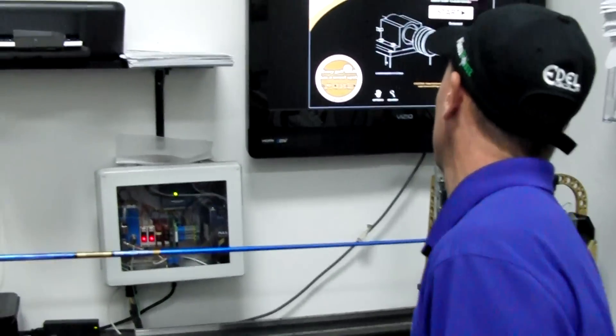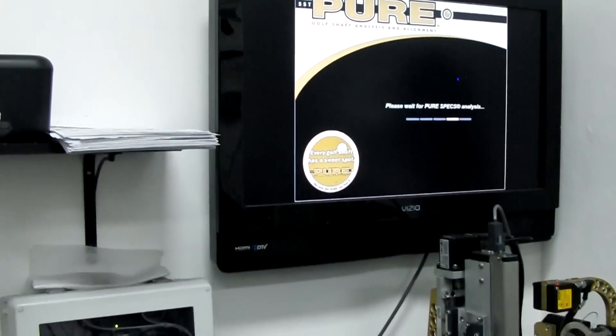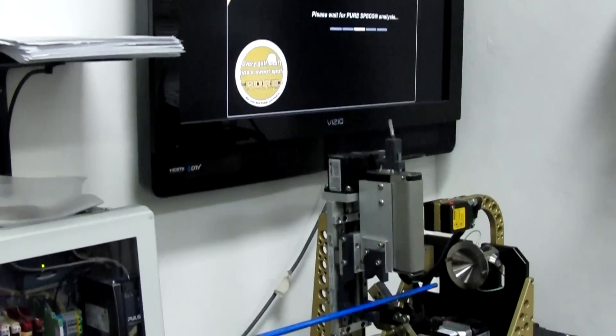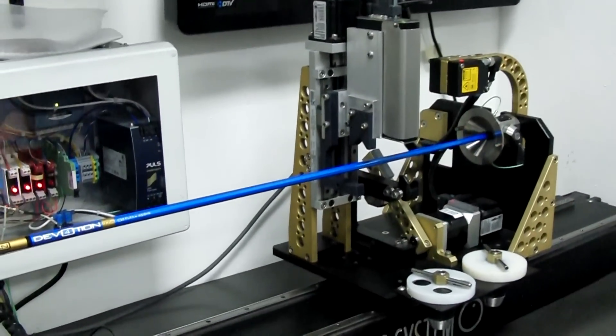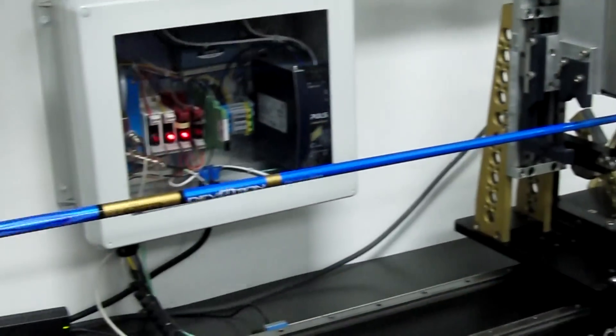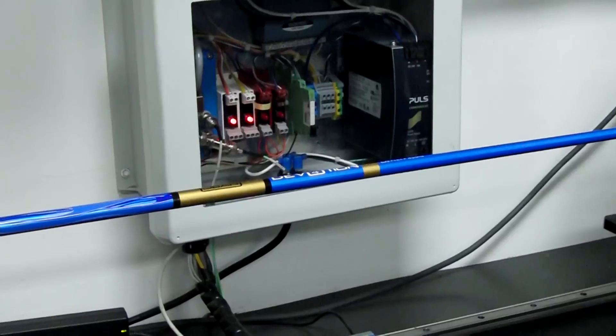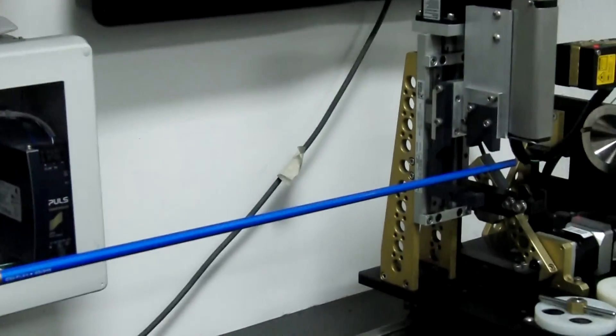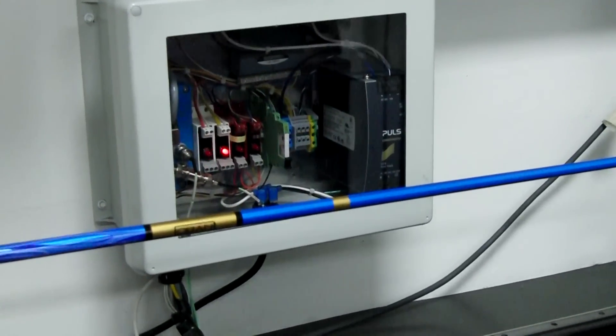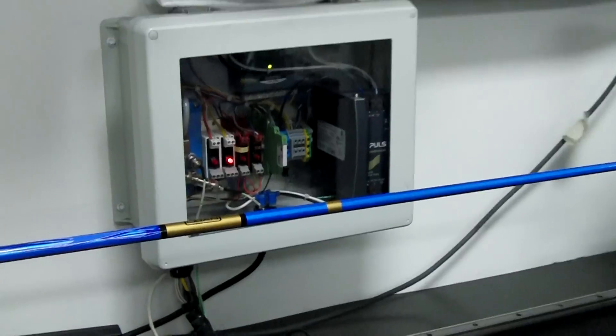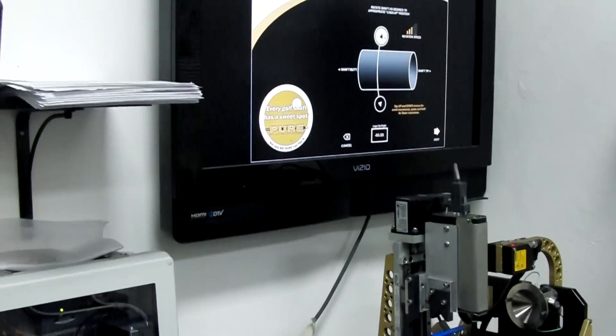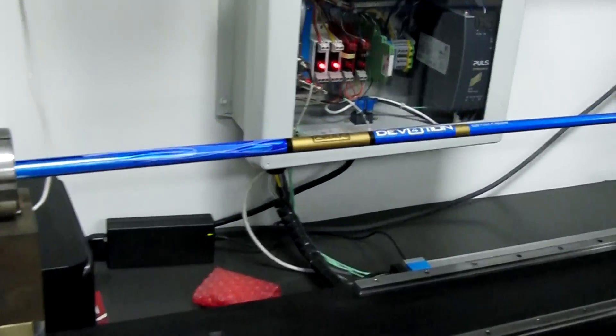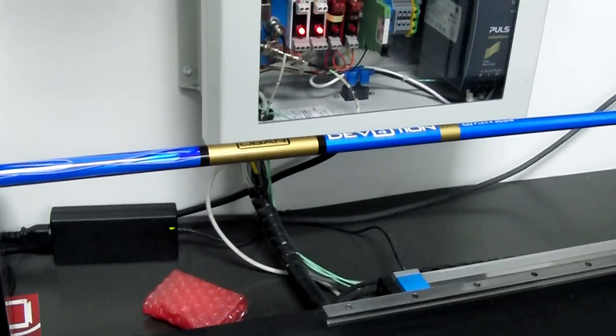We're going to click start on this. This will be automated. This machine is going to come down. It's going to clamp the shaft. And I'm going to locate logo up which is actually the spine that we found on that shaft.